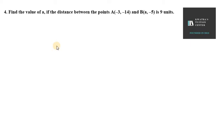Hello everyone, let's start with question number 4. Find the value of A if the distance between the points A, that is (-3, -14), and B, that is (A, -5), is 9 units. So here the distance between point A and B is 9 units.